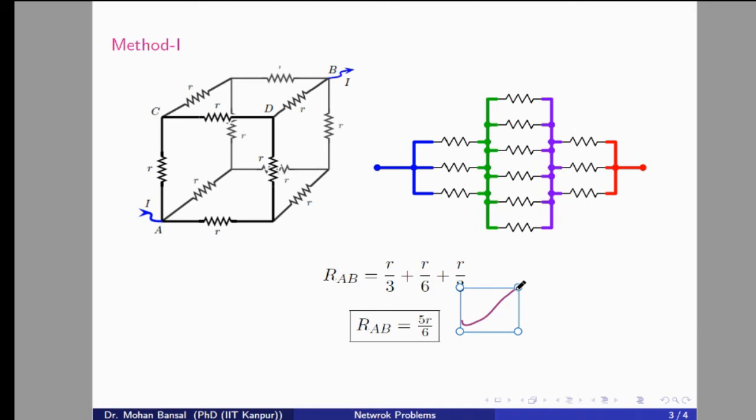Students usually just memorize the equivalent resistance value for the diagonal of a cube, but you should understand how we arrive at this result. If the question asks: all resistance values are equal to 5 Ohm, what is the equivalent resistance? Just substitute R = 5, and you get 25/6 Ohms. That is the first approach. Now let us move to the second approach.